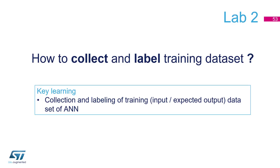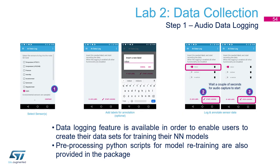We will continue with the next lab. You don't have to download anything new — just start the app and synchronize it with your application. Then go to the fifth page and find the AI data log. There is a menu, so you can press on it and select AI data log.